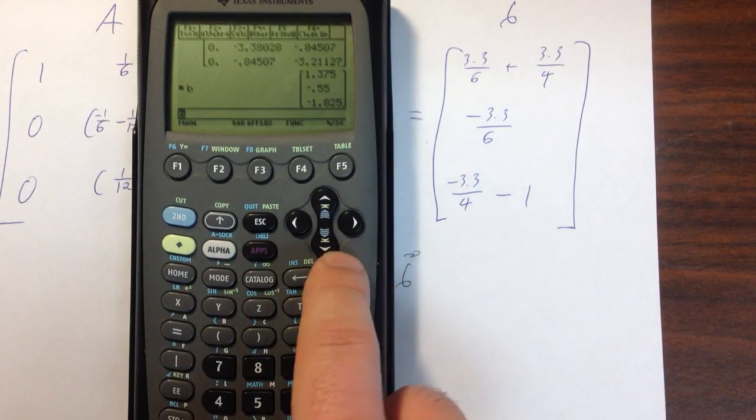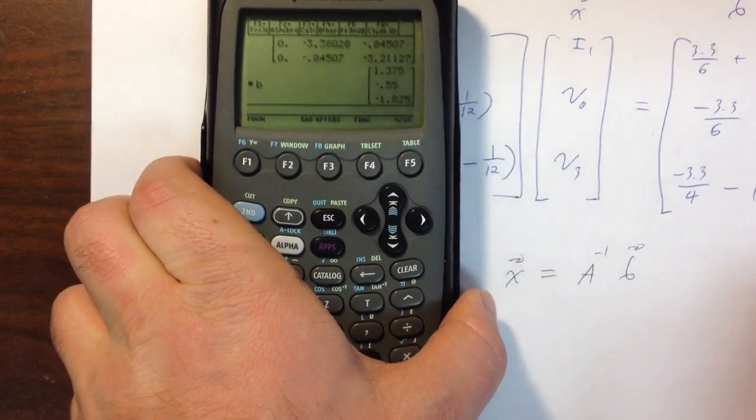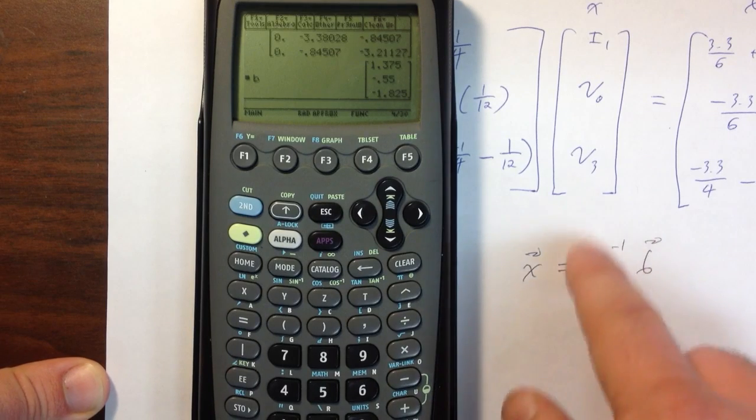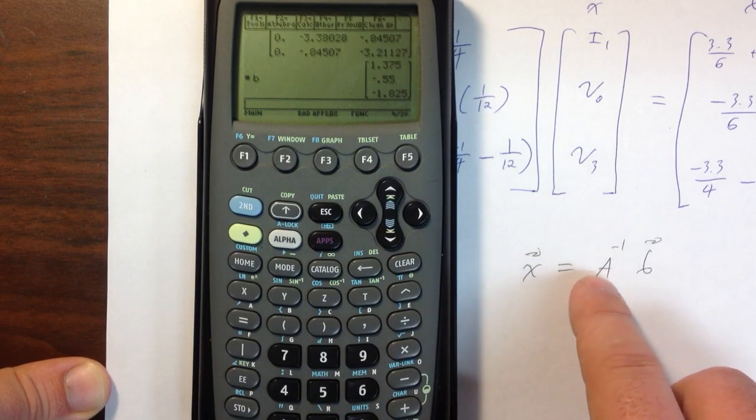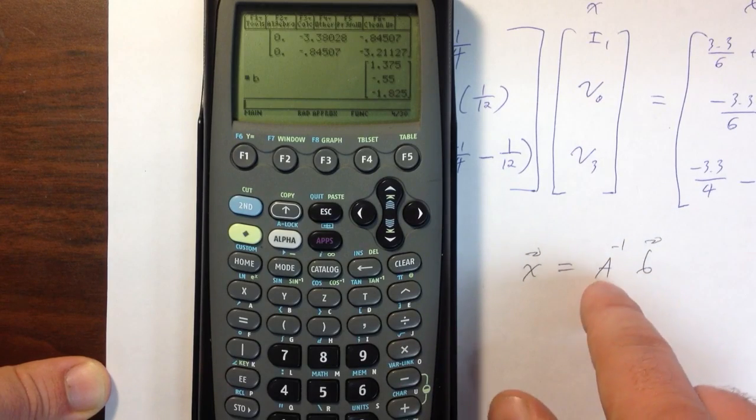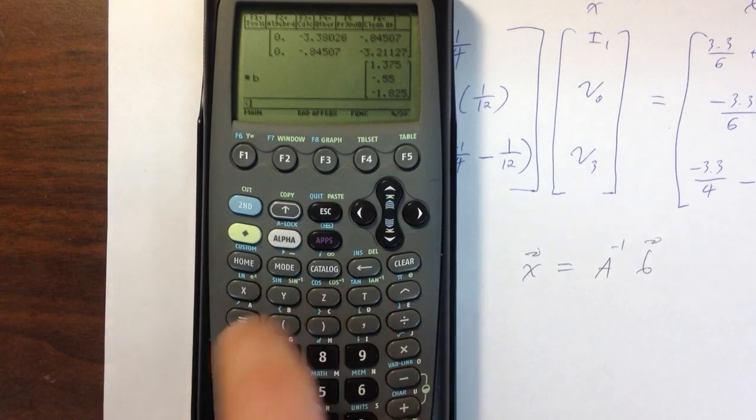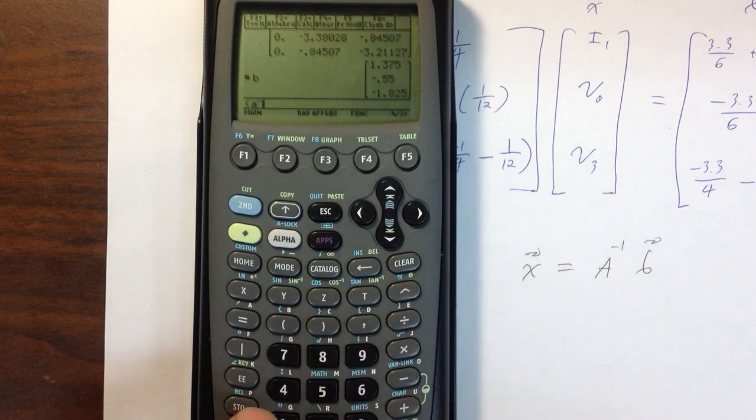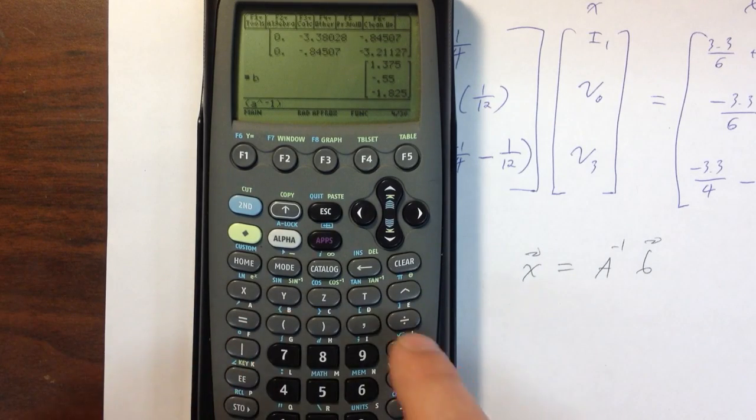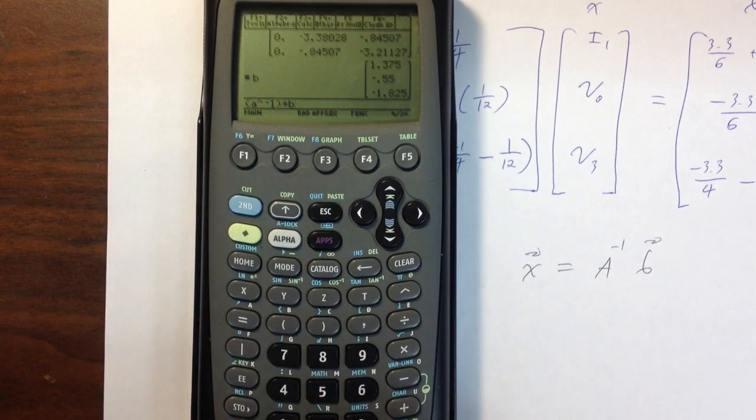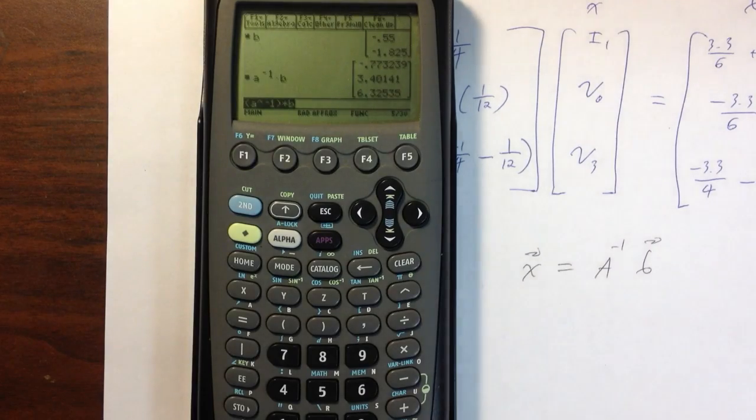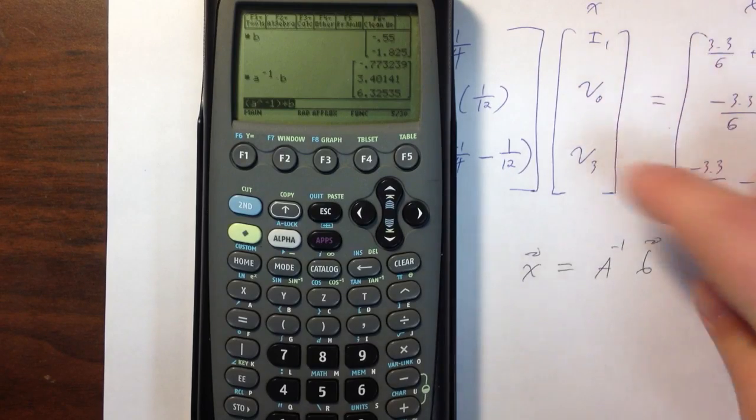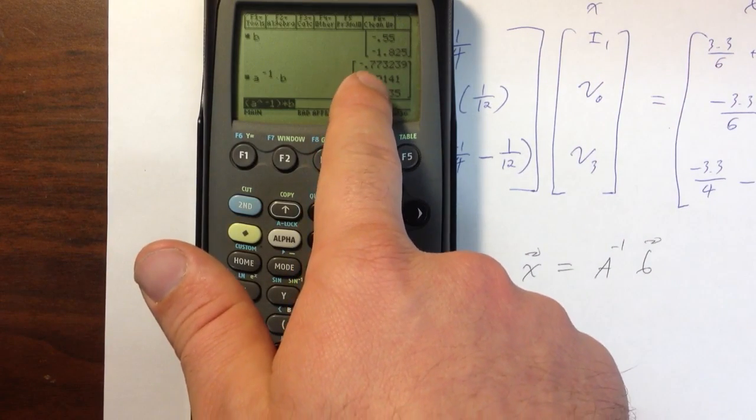If I want the solution, remember what I have to compute is X equals A inverse times B. I have to multiply it exactly in this order. I can't do B times A inverse. I have to multiply A inverse times B. So now I open parentheses alpha A raised to the minus one power, close parentheses, times alpha B. That's it. I get my values for X. My I1 in this particular problem, so X is I1, V0, and V3. I1 is minus 0.77 amps. V0 is 3.4 volts. And V3 is 6.3 volts.